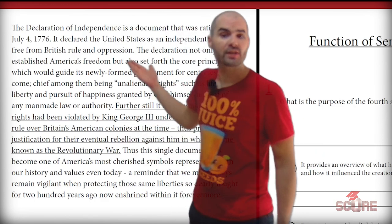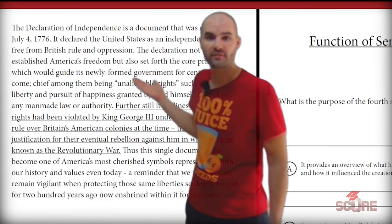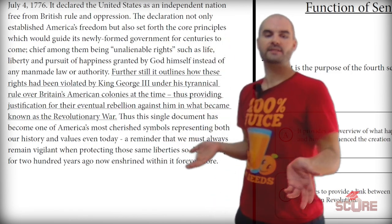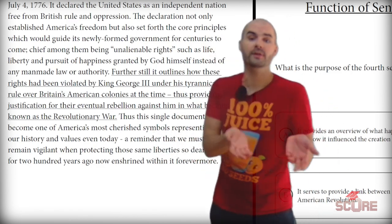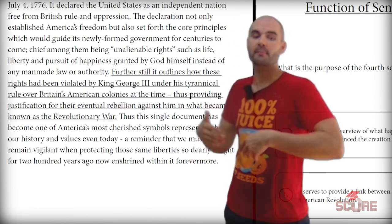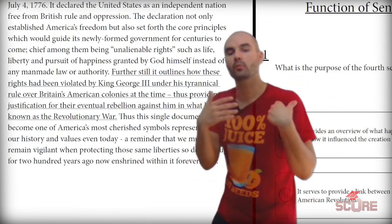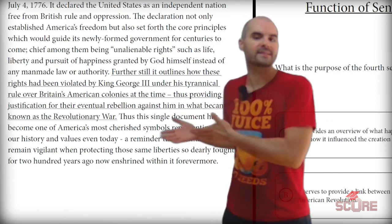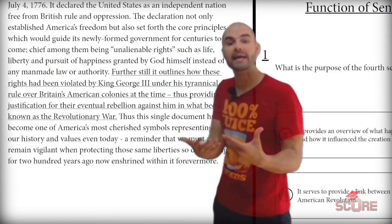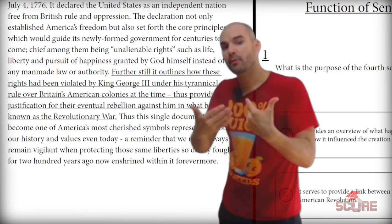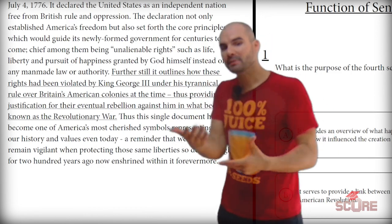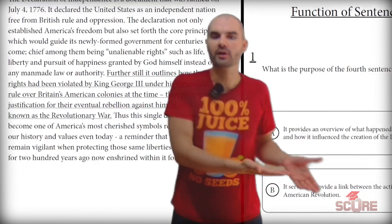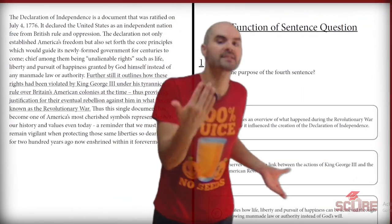In this case, we're talking about the Declaration of Independence and that it was ratified on July 4th, 1776. The underlined sentence says: 'Further still, it outlines how these rights have been violated by King George III under his tyrannical rule over Britain's American colonies at the time, providing justification for their eventual rebellion against him in what became known as the American Revolutionary War.' All I'm seeing here is that it's telling me the Declaration of Independence explained how the King violated their rights and that was why they went to war — it's explaining the cause of the war and George III's role. Now I'll look at the answer choices.